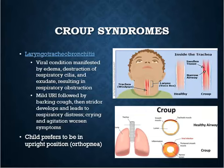Croup syndromes include epiglottitis, laryngotracheobronchitis (LTB), and laryngitis. When most people say 'croup,' they mean LTB — laryngotracheobronchitis. This is described as a barking or seal-like cough. It's a viral illness, so it doesn't necessarily require medication, but because it's upper respiratory, you get more inspiratory symptoms and that barking cough rather than wheezing.